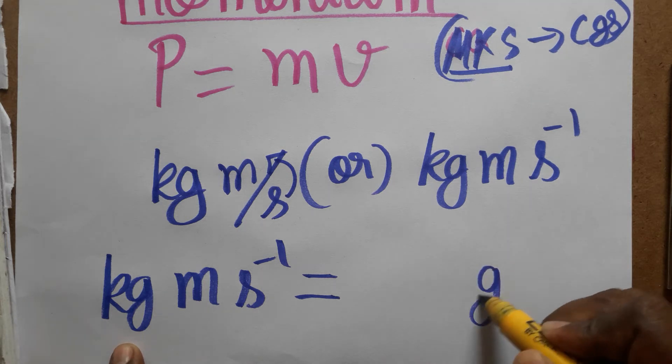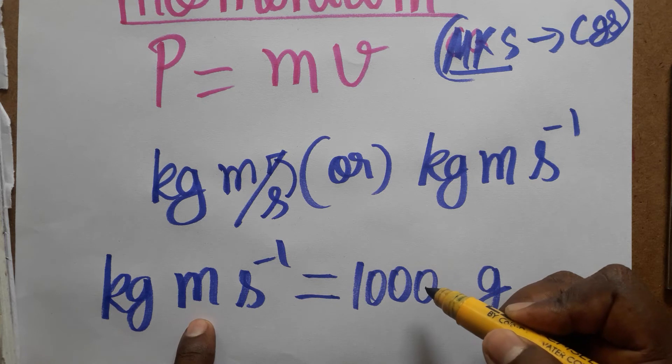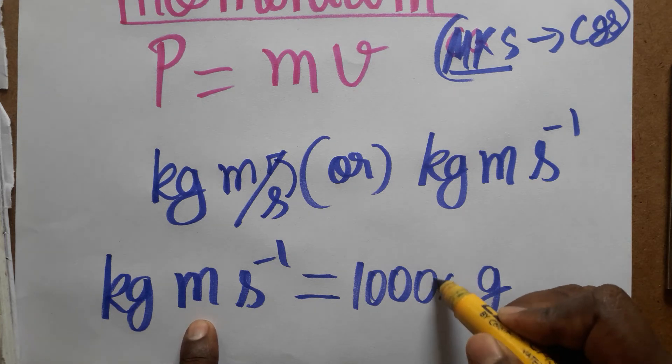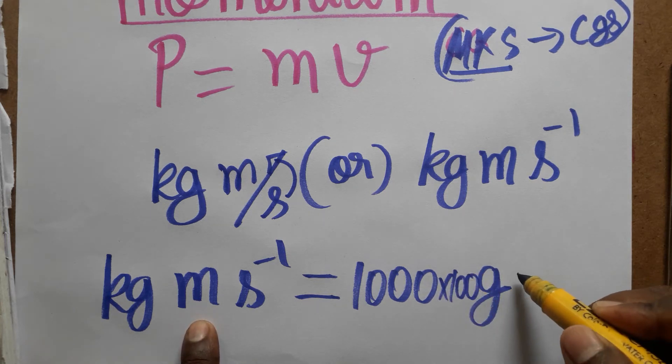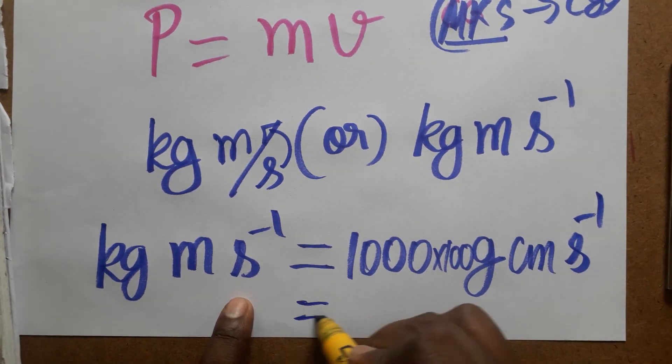One kilogram is one thousand grams. One meter is one hundred centimeters, so into one hundred, gram centimeter second minus one.